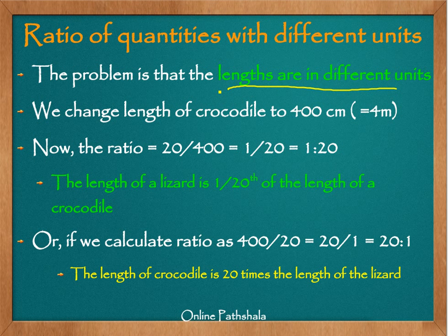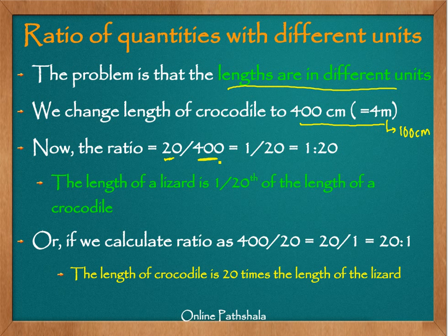So let us fix this. The length of the crocodile is 4 meters and the length of the lizard is 20 centimeters. We will convert the crocodile's length into centimeters — the same unit as the lizard. Since 1 meter equals 100 centimeters, 4 meters equals 400 centimeters.